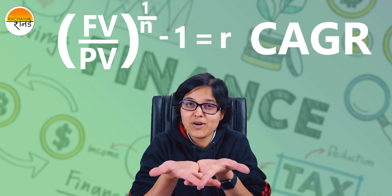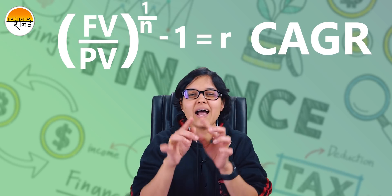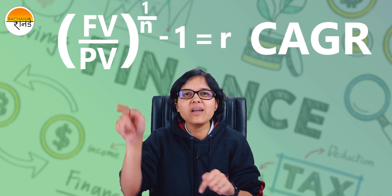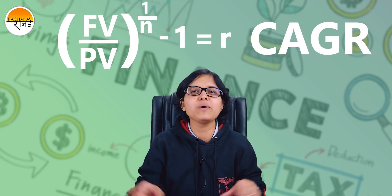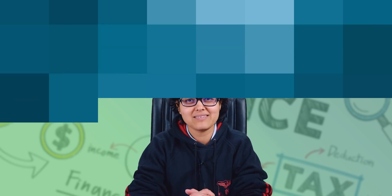CAGR is nothing but the compounded interest formula with LHS and RHS components rearranged — it's as simple as compounded interest. Now that your mind is warmed up with the CAGR formula, which is a modified version of the compounded interest formula, let us understand the practical applications of CAGR.